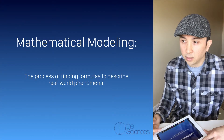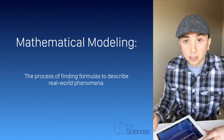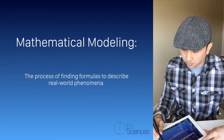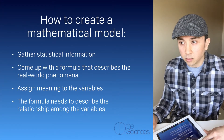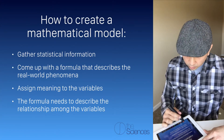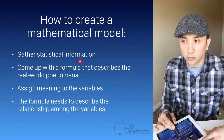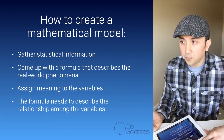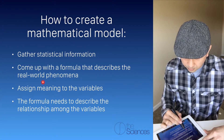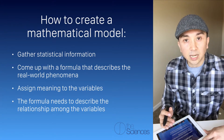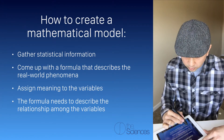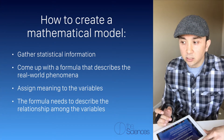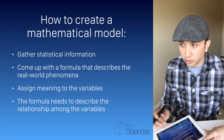Mathematical modeling is a process of finding formulas to describe real-world phenomena. To create a mathematical model, we first gather statistical information, then come up with a formula that describes the real-world phenomenon, assign meanings to the variables, and then establish a formula that describes the relationship among the variables.